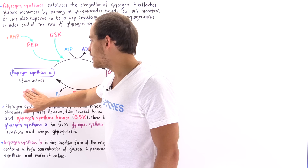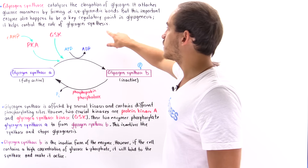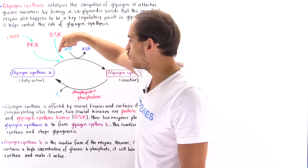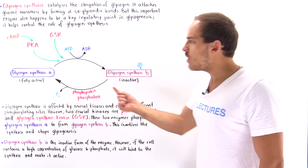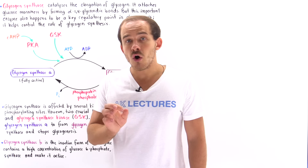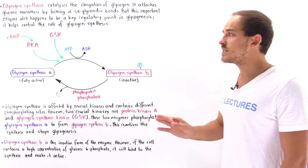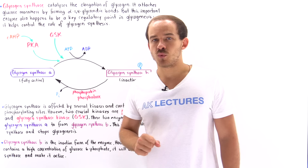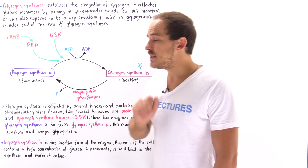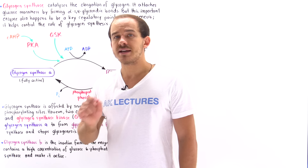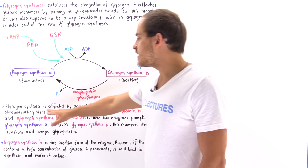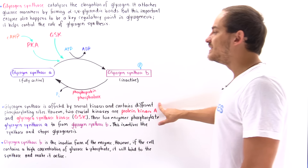To convert glycogen synthase A — the fully active molecule that stimulates glycogen synthesis — into glycogen synthase B, the inactive form, ATP is used to phosphorylate glycogen synthase A. Glycogen synthase A contains several sites where phosphorylation can take place and responds to a number of different protein kinases. Two important protein kinases that deactivate glycogen synthase A by phosphorylating it are protein kinase A (PKA) and glycogen synthase kinase 3 (GSK-3).